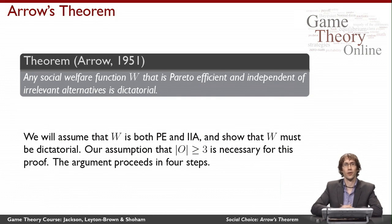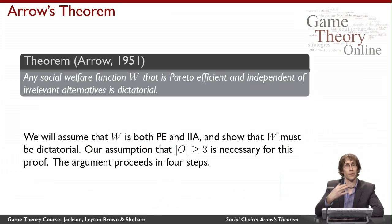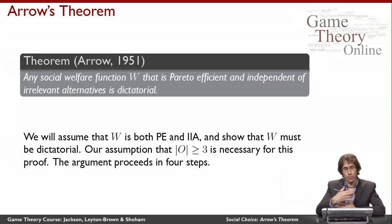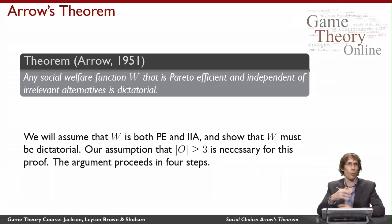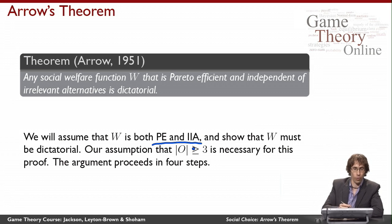Having stated all of these definitions, we're now ready to formally state Arrow's theorem: any social welfare function W that is Pareto efficient and independent of irrelevant alternatives is dictatorial. The proof works as follows. I'm going to give you what I think is a really beautiful proof, because we're able to say something about a space of very complicated functions — from sets of orderings into orderings — without knowing exactly which function we're talking about. We assume simply that our function is Pareto efficient and IIA, and we'll see that assumption is enough to show it must be dictatorial.